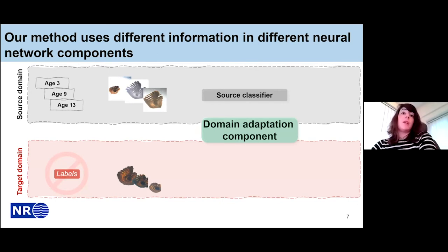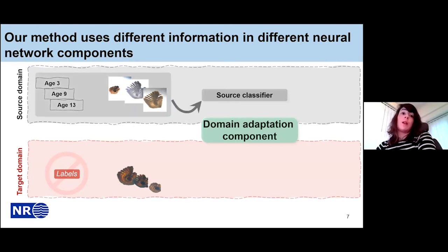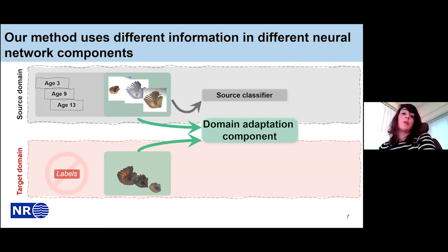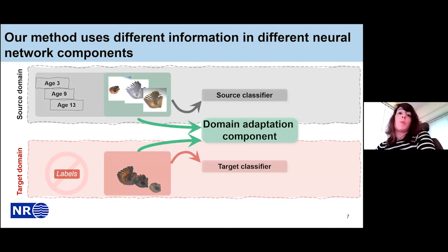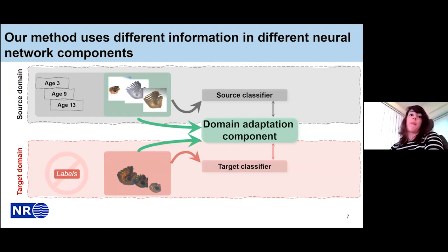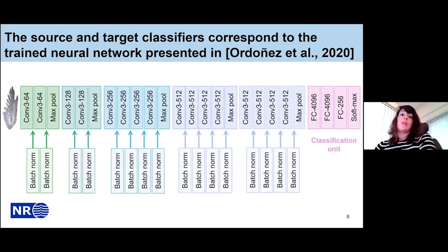Our approach uses different information in different neural network modules. In the source classifier, we use labeled ages and images from the source domain. In the domain adaptation component, we use images from both the source and target domains. In the target classifier, we use images from the target domain. The three components share the same weights and architecture. Importantly, no labels from the target domain are used at all. The source and target classifiers correspond to the trained neural network from the Ordonia et al. paper, originally trained with images from the Institute of Marine Research of Norway, based on the VGG-19 architecture with batch normalization and a slightly modified classification unit.